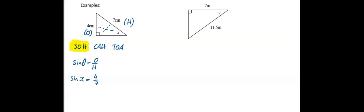We have to find x. If you look on your calculator where you find your sine button — which you've been using for previous questions — just above the sine button its second function is sine to the minus one. This means inverse sine.